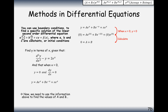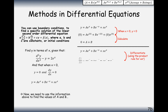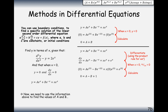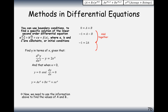We still have two unknowns, so we differentiate the y function — using the product rule where needed — and plug in x equals 0, dy by dx equals 0. That gives us A minus B plus 1 equals 0, so minus 1 equals A minus B. Now we have two simple simultaneous equations. Adding them gives A equals minus one half, and then B equals one half.